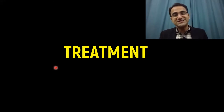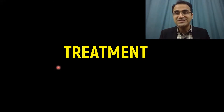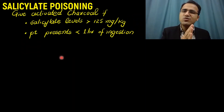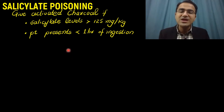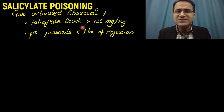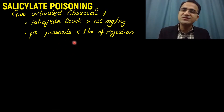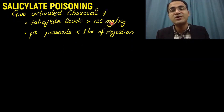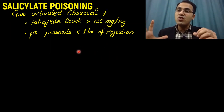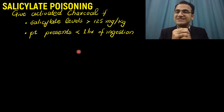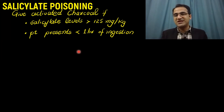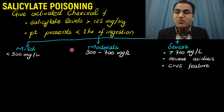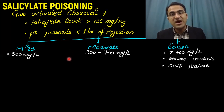Coming to the treatment of salicylate poisoning, you must use an ABC approach — airway, breathing, circulation. After protecting the airway and breathing, you give activated charcoal if the patient presents within one hour of ingestion and the ingestion was greater than 125 mg per kg. Activated charcoal binds the salicylates and inhibits their reabsorption in the gut. You then perform salicylate levels after a few hours.